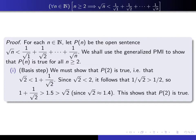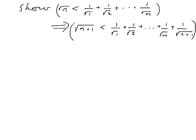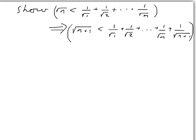Next we pass to the inductive step. We have to show that if we assume P(N) is true, then we can deduce that P(N+1) is true — that is, if you add up all the terms plus one additional term 1 over root N+1, that sum is bigger than root N+1. Let me do a little calculation to explain how I figured out how to write the proof of such a thing. You have to show that if you assume this sum is bigger than root N, then you can deduce the extended sum is bigger than root N+1.